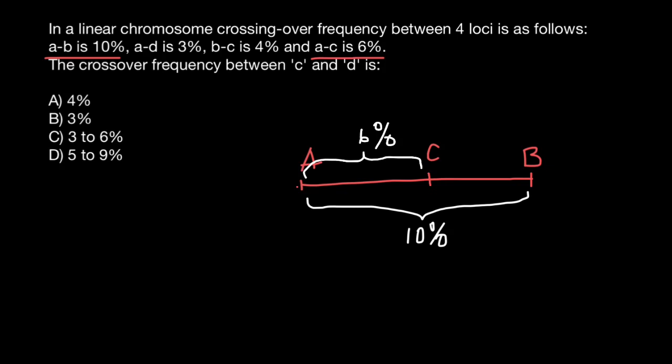But we also can say that we can plot gene C here. Again, between A and C we are still going to have 6%. So this position of the gene C is under question.